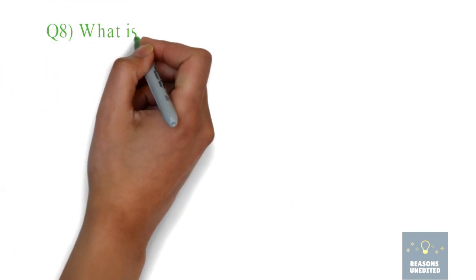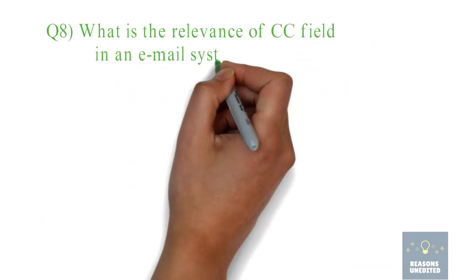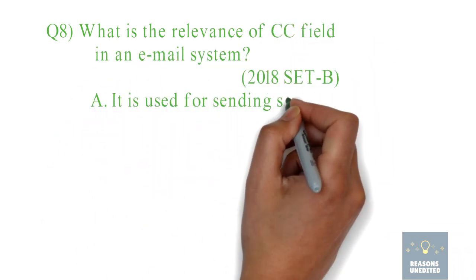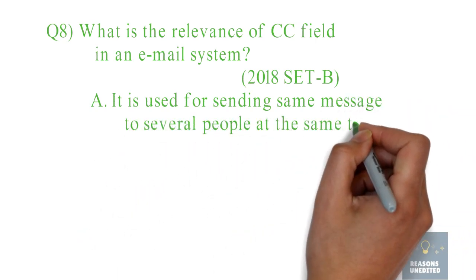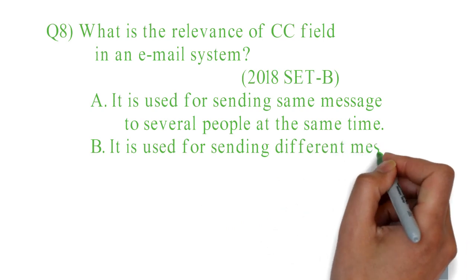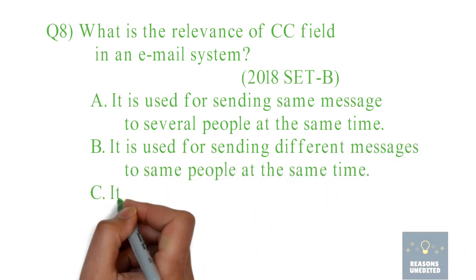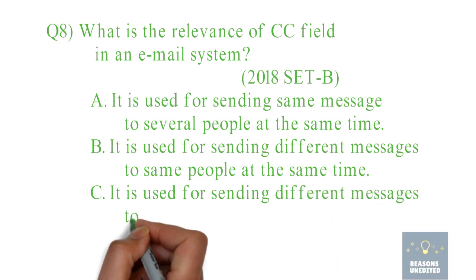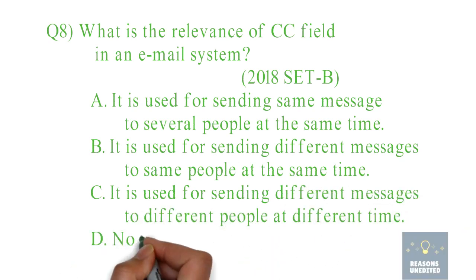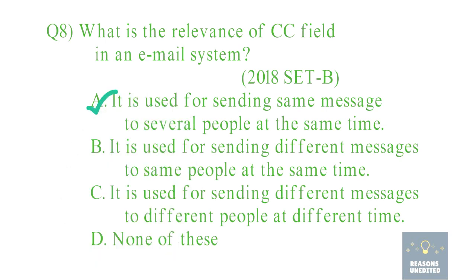Question 8. What is the relevance of the CC field in an email system? Here CC is abbreviated as carbon copy. Option A: It is used for sending the same message to several people at the same time. Option B: It is used for sending different messages to the same people at the same time. Option C: It is used for sending different messages to different people at different times. Option D: None of these. The correct option is Option A — it is used for sending the same message to several people at the same time.